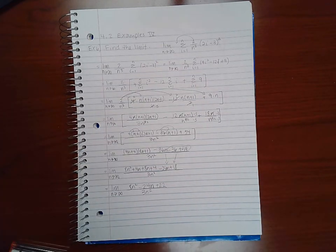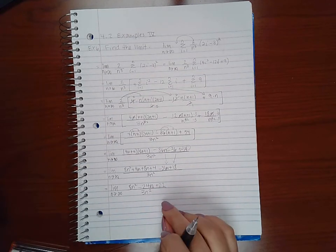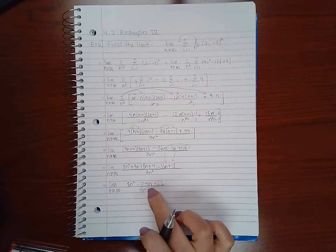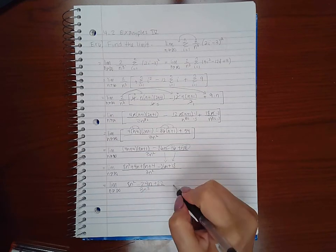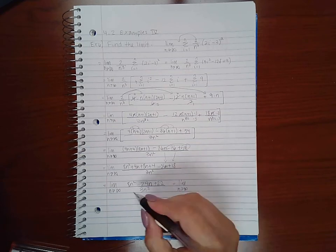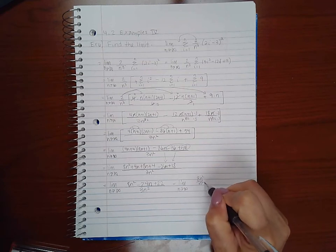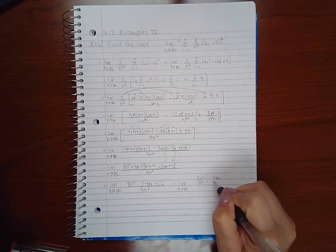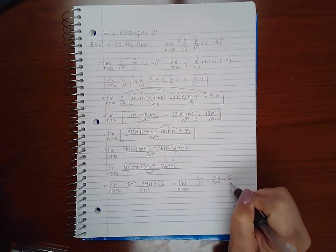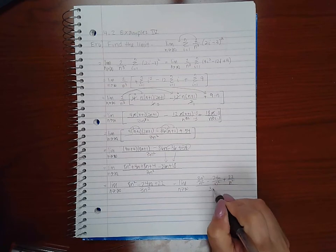Now I do need to take this limit, so in order to do that we have to use our limit strategies. Now what we do is we take the highest degree of the denominator and we divide every term by that. So this is n squared, I'm going to divide every term by n squared. I don't need to mess with the coefficient, just the variable term.